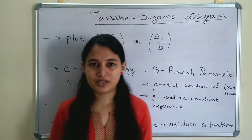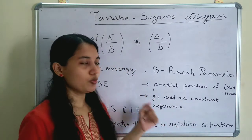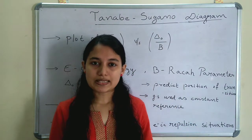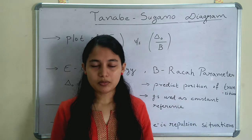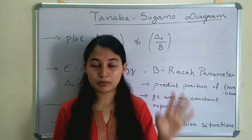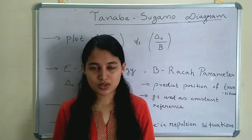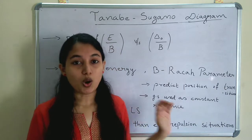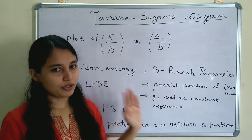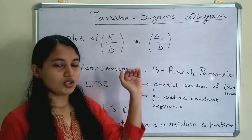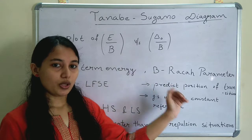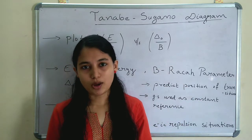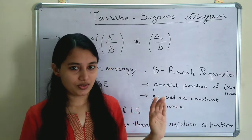Hi everyone, welcome to Chemicals Academy. Let's move on to the topic Tanabe-Sugano diagram. We discussed the orbital diagram, and one main limitation was there: it couldn't explain the low spin octahedral complexes. The Tanabe-Sugano diagram can explain both high spin and low spin complex electronic transitions.